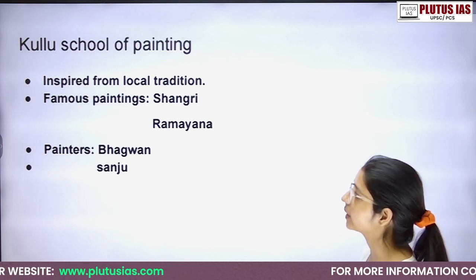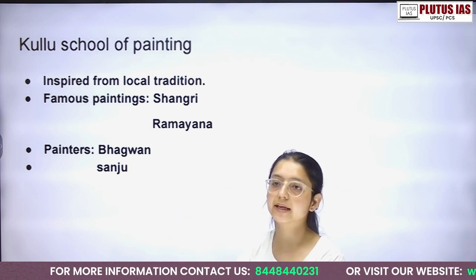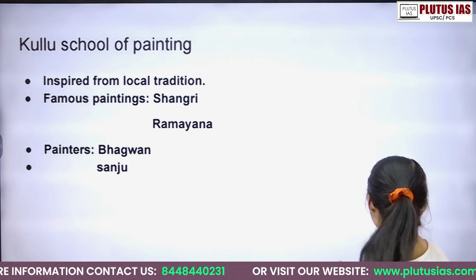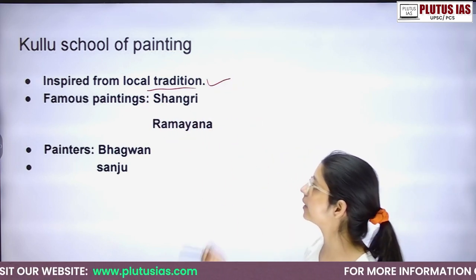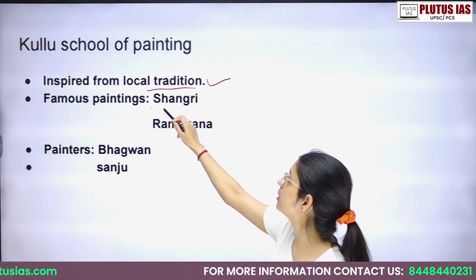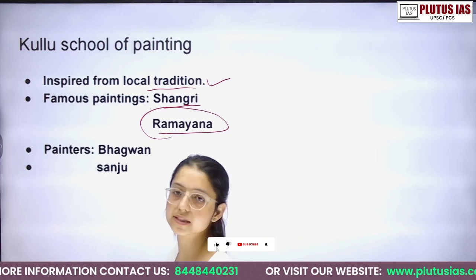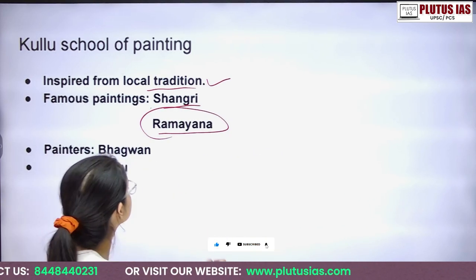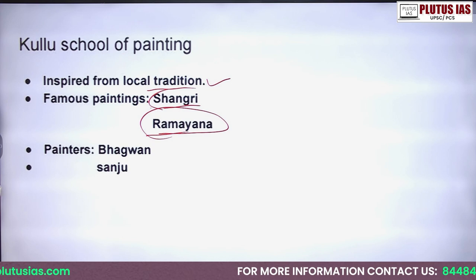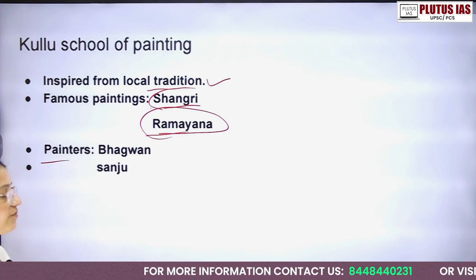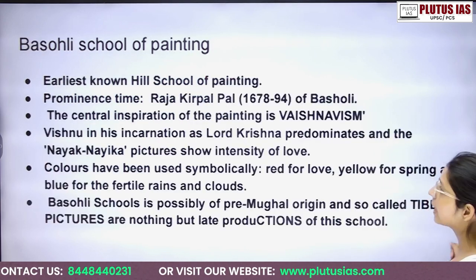The Kullu School of Paintings is located in a more hilly area — the Inner Himalayas. These paintings were inspired by local traditions. The famous paintings include the Shangri Ramayana. Shangri is also a place in the Himalayas. The most important painters of the Kullu School were Bajwan and Sanju.